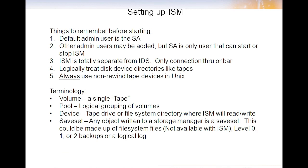Mentally and logically, treat all disk devices as if the directory itself is a tape. ISM internally will treat them as a tape; the only difference is you'll be able to look in a directory and see the actual save set files. And always — unlike OnTape — use non-rewind tape devices. ISM is a storage manager that can put multiple save sets onto a single tape or disk device, so it can issue a fast-forward or rewind to search through save sets to find the particular one it's looking for.